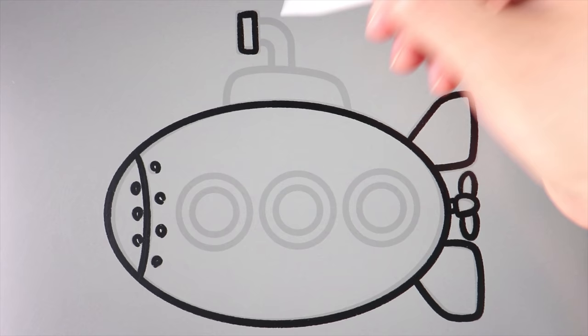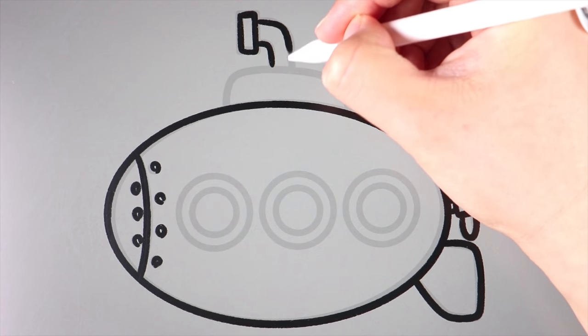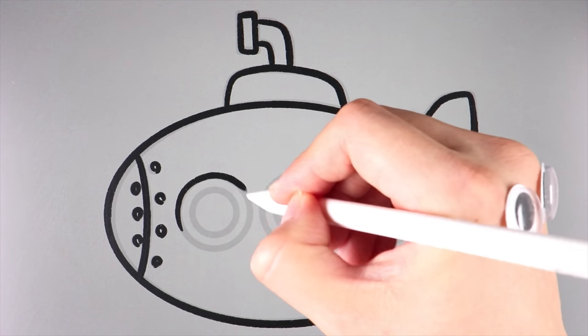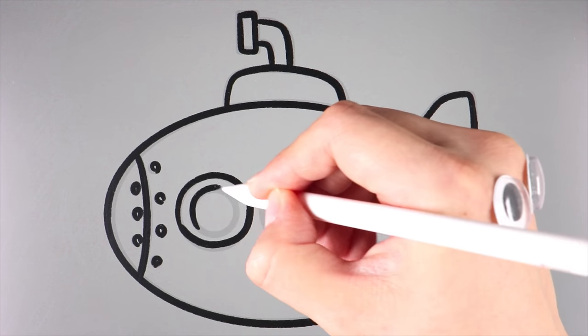And through this periscope, you can see what's going on outside of the water. Let's draw three small windows to see who is swimming by when we go underwater.